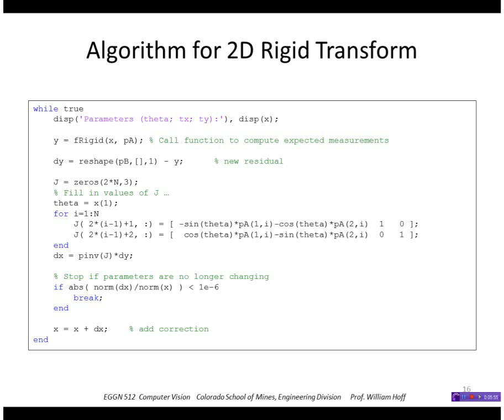Using the equations we just looked at, namely sine of theta times x minus cosine theta times y, and then the 1 and 0 and so forth. So this loop fills in two rows at a time of my Jacobian matrix J.